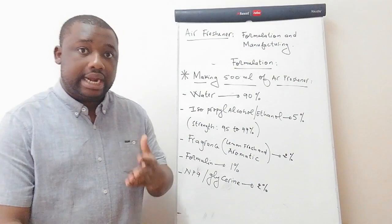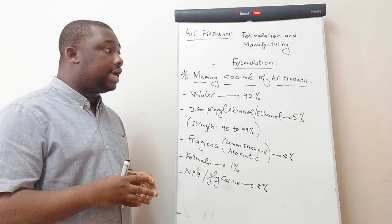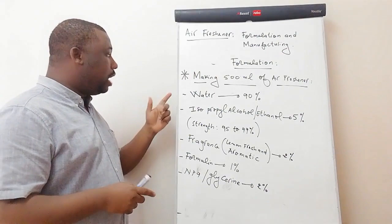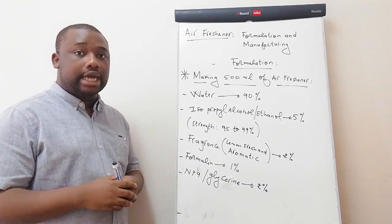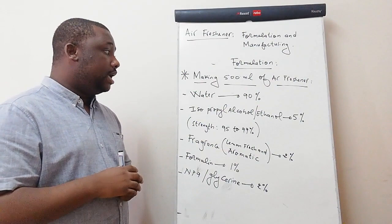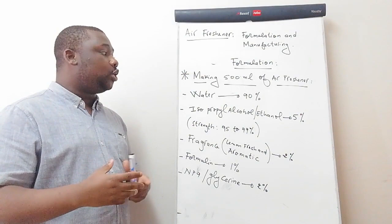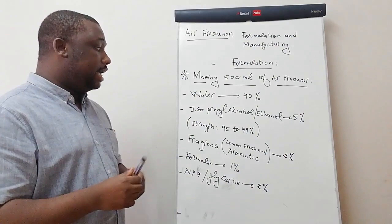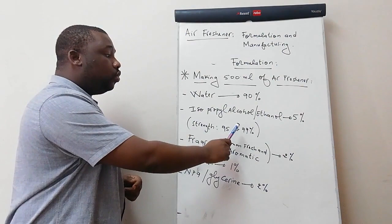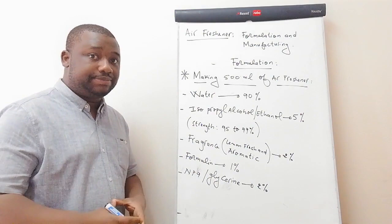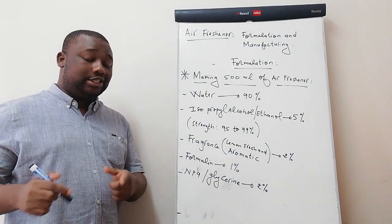Now let us get to the formulation. To produce an air freshener, the ingredients you need are: water, isopropyl alcohol or ethanol — you need to use one of the two, it's a matter of preference. Isopropyl alcohol and ethanol are two alcohols with similar properties, though isopropyl alcohol is twice as toxic as ethanol. The alcohol you use should have a strength between 95 to 99%. The one we're going to use here has a strength of 96%.